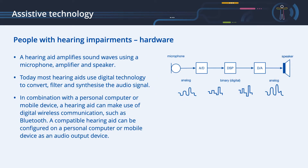A hearing aid amplifies sound waves using a microphone, amplifier, and speaker. Today, most hearing aids use digital technology to convert, filter, and synthesize the audio signal. In combination with a personal computer or mobile device, a hearing aid can make use of digital wireless communication such as Bluetooth. A compatible hearing aid can be configured on a personal computer or mobile device as an audio output device, similar to a Bluetooth speaker.